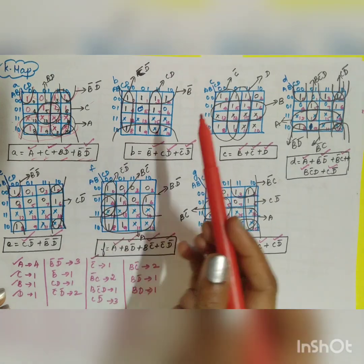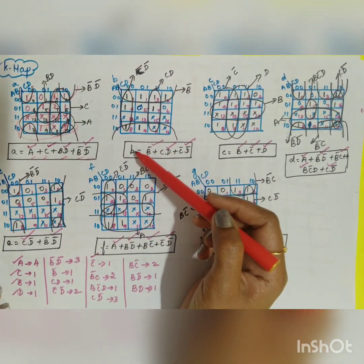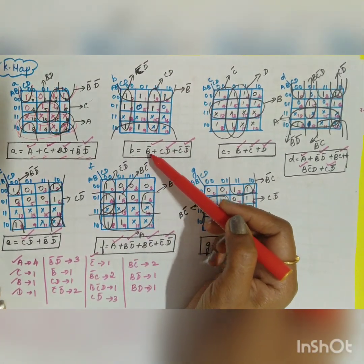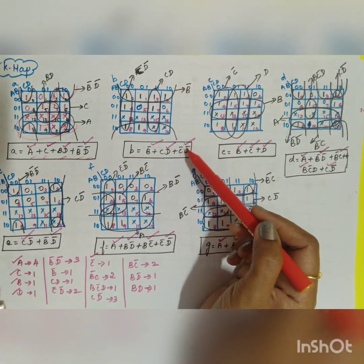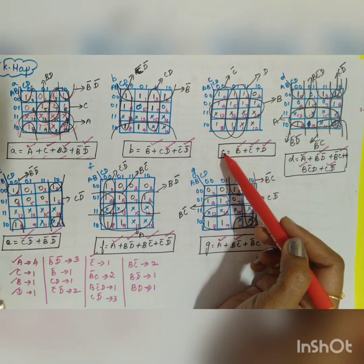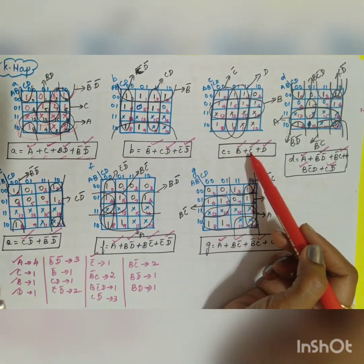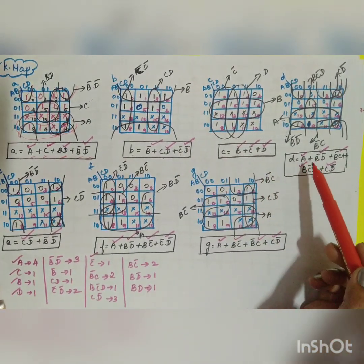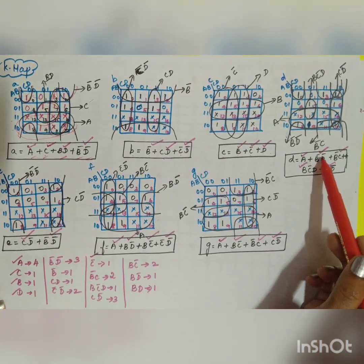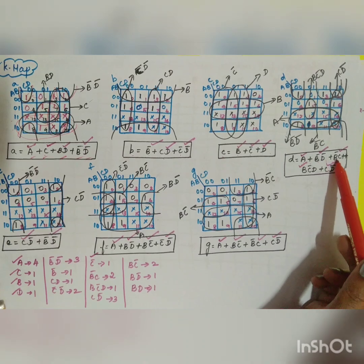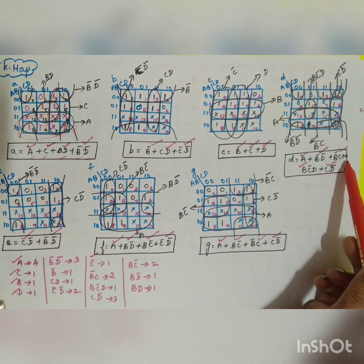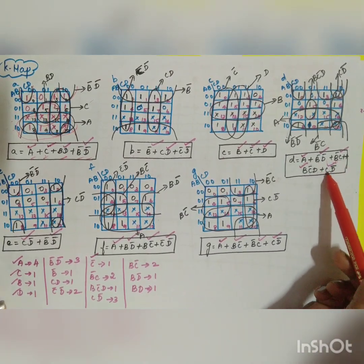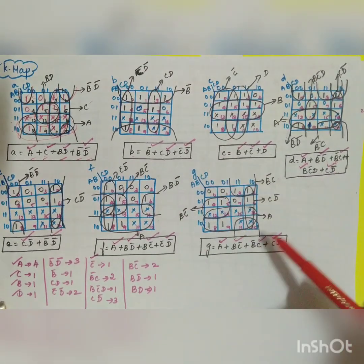Similarly, you can solve for the remaining outputs: b = B̄CD + C̄D̄, c = BC̄ + D, and d = A + B̄D̄ + B̄C + BC̄D + CD̄. These Boolean expressions are obtained by simplifying each output using K-maps.